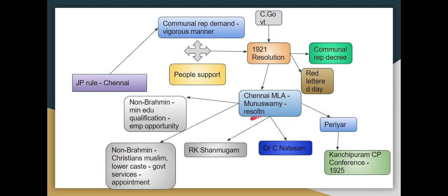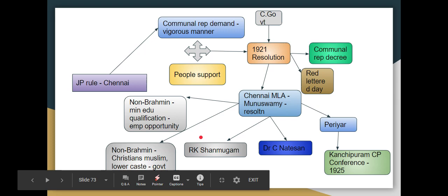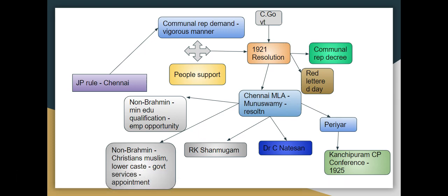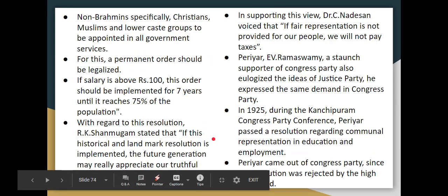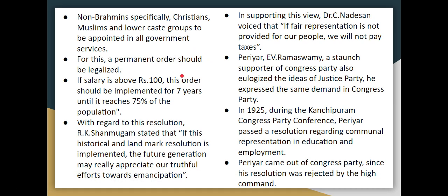A Member of the Legislative Assembly passed a resolution stating a minimum educational qualification for employment opportunity. Christians, Muslims, and lower-caste groups were given appointment opportunities in government. That resolution was made a permanent legal order. It was implemented with 75% of the population being reached, including those with salaries of 100 rupees.